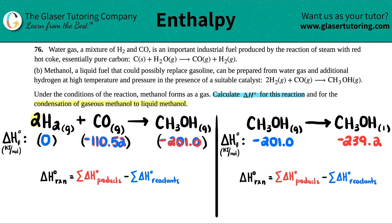There's 2 H2s which means that I would multiply this by 2. There was 1 CO so I multiply that by 1. There's 1 CH3OH, I multiply this by 1. Same thing on this side. There was 1 methanol gas so I multiply this by 1, and there was 1 methanol liquid so I multiply this by 1.